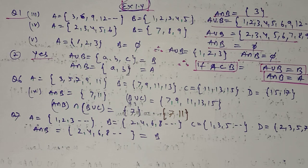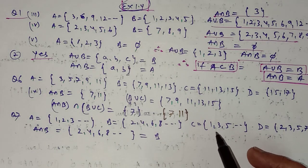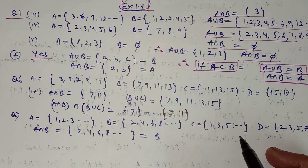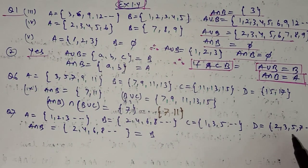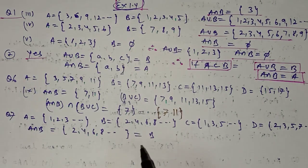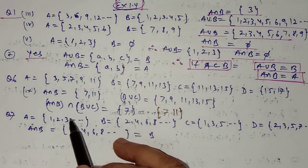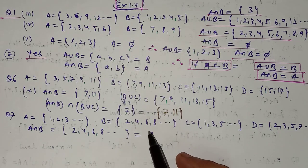In question number 7, the sets are given in set builder form. Set A is natural numbers: {1,2,3,4,...}. Set B is even natural numbers: {2,4,6,8,...}. Set C is odd natural numbers: {1,3,5,...}. Set D is prime numbers: {2,3,5,7,11,13,...}. In the first part, A intersection B gives the common elements, which is {2,4,6,8,...}, which equals B. If the question is in set builder form, try to write the answer in set builder form as well.